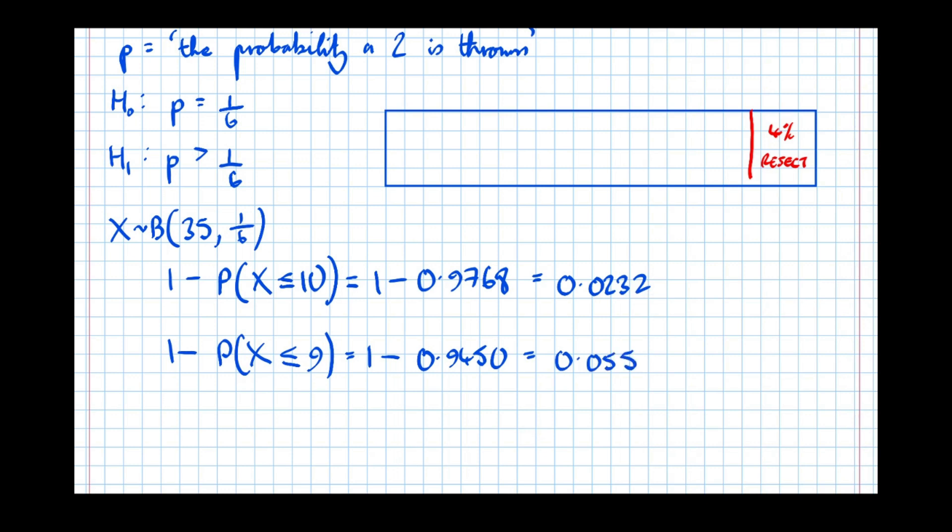1 minus 0.9450 is 0.055. And what we've actually worked out here, 1 minus the probability X is less than or equal to 10, the probability X is greater than or equal to 11. And here we've worked out the probability that X is greater than or equal to 10. That's what 1 minus the probability X is less than or equal to 9 gives us.